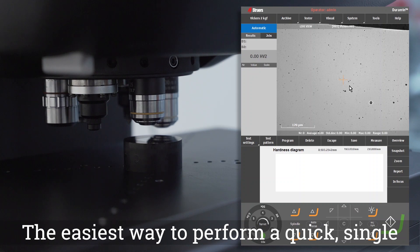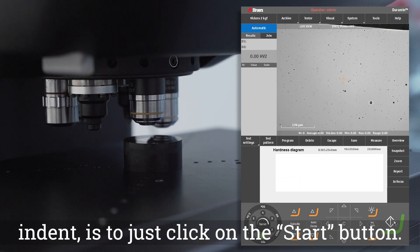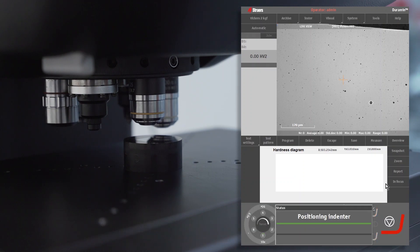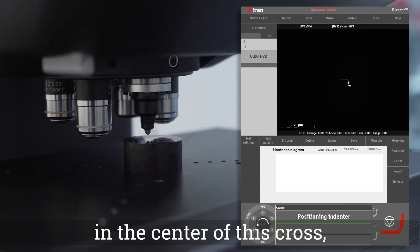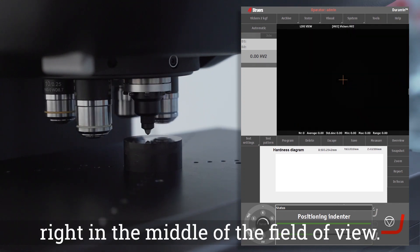The easiest way to perform a quick single indent is to just click on the start button. An indent will be made in the center of this cross, right in the middle of the field of view.